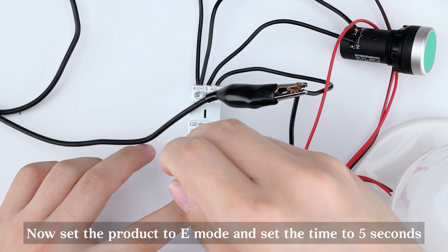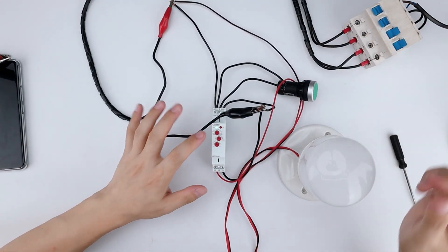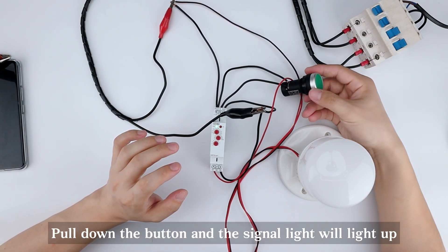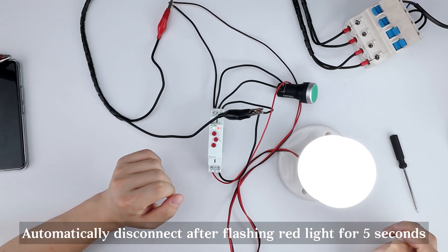Now set the product to E-Mode and set the time to 5 seconds. Turn on electricity. Pull down the button and the signal light will light up. Automatically disconnect after flashing red light for 5 seconds.